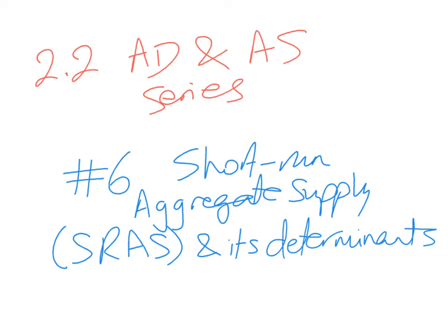This is video number 6 of the Aggregate Demand and Aggregate Supply series in Unit 2.2 of the IB Macroeconomic Syllabus. In this video, I will introduce short-run aggregate supply, SRAS, and its determinants. Let's get started.